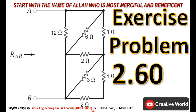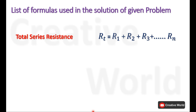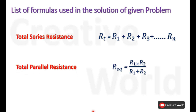Welcome to Creative World. In this video we will solve Chapter 2 exercise problem number 2.60. While solving this problem we will be using the total series resistance calculation formula. Equivalent resistance of a series connection is calculated by taking the sum of all resistances connected in series. We will also be using the parallel equivalent resistance formula: R equivalent equals the product of both resistances divided by their sum.